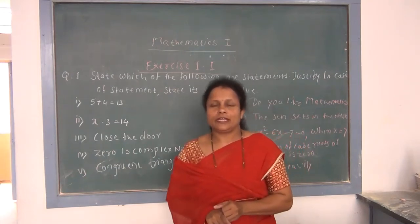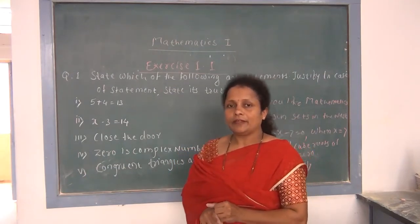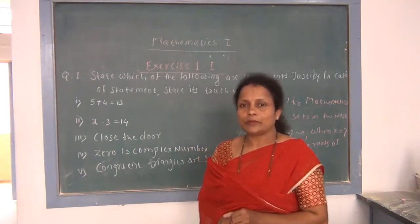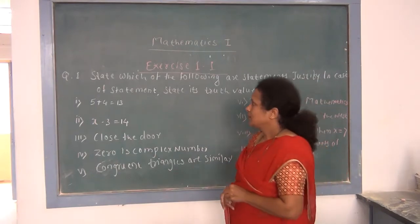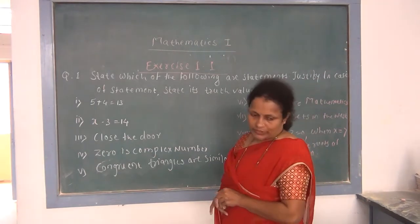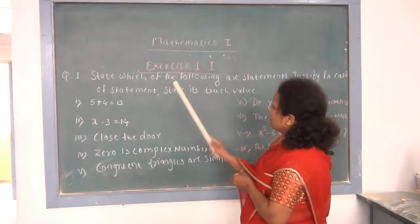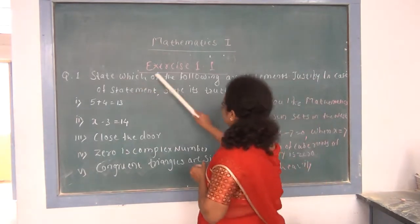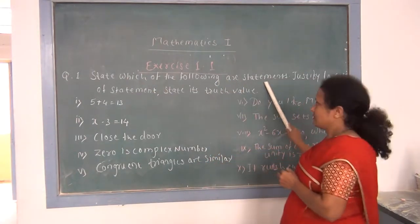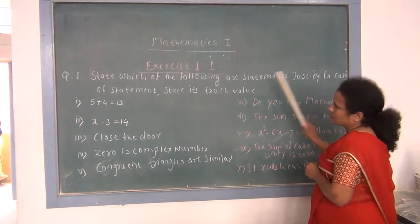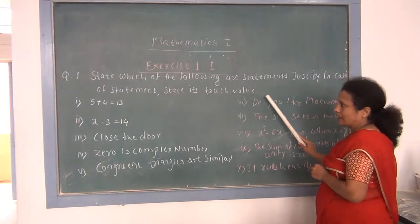This is number 1.1 related to our statement, its truth value and logical connectives. Our first question is: state which of the following are statements. Justify, and in case of a statement, state its truth value.